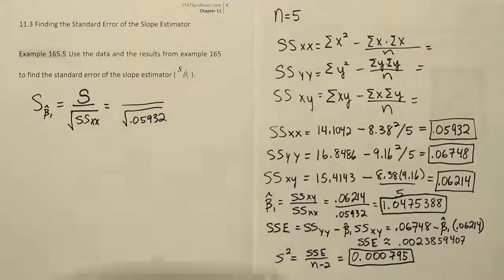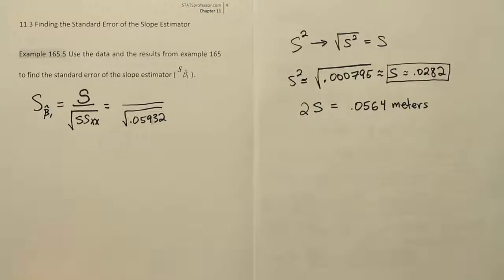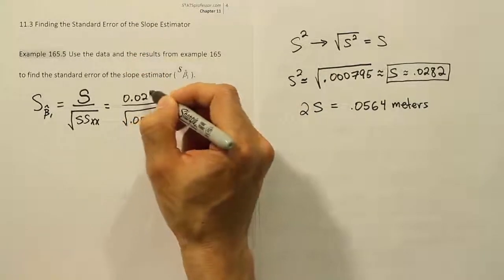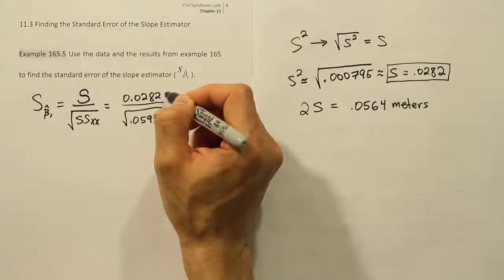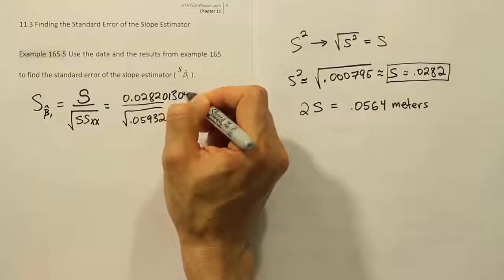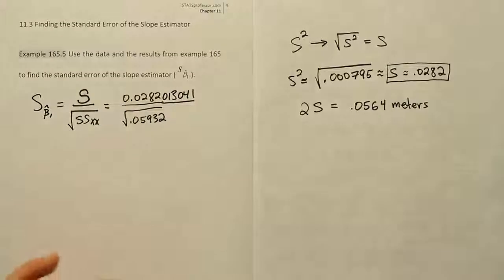.05932 that was actually the second page of the work and when we did that we ended up with an answer of .0282. That was of course rounded off a little bit, the actual number from my calculator was .0282 and then it was .013041, so .013041 that was the rest of it. I'm just putting it all in there because I want to make sure that I don't introduce too much rounding up front.